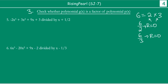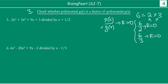So this is an application of the remainder theorem. What we have to do is check whether polynomial G(x) is a factor of polynomial P(x). We will find out the remainder when P(x) is divided by G(x). If we find that the remainder is equal to 0, then we can say that G(x) is indeed a factor of P(x) — just the same way as we apply it for numbers, the same thing applies for polynomials too.